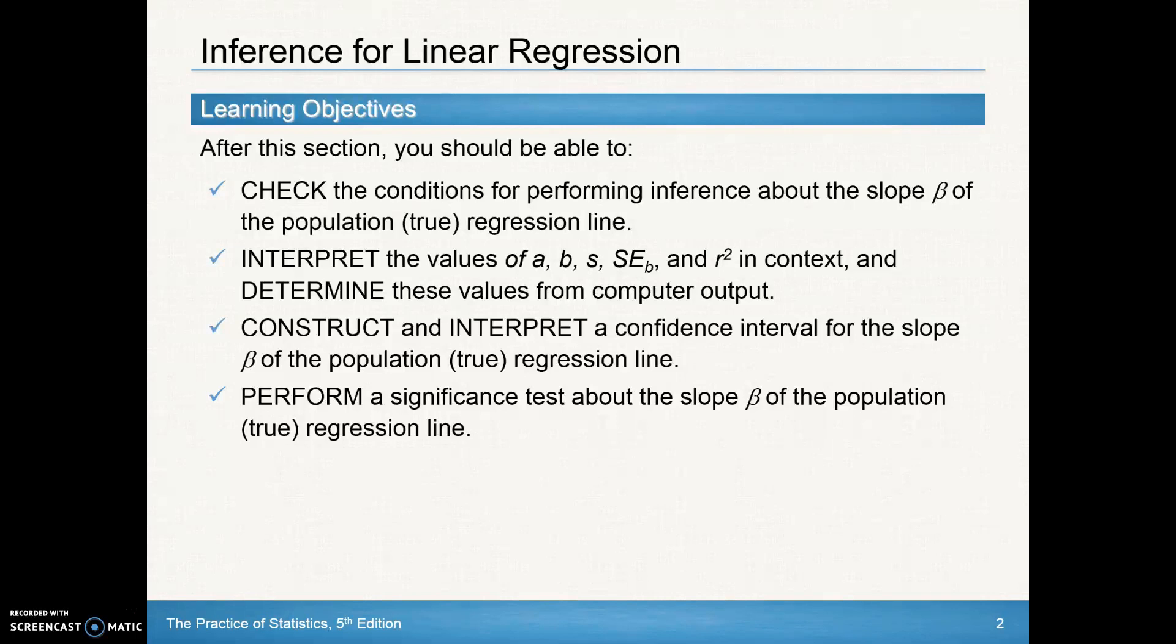After this section, we should be able to check the conditions. That's our second box in our state plan do and conclude procedures for performing inference. We're going to be looking at the conditions for making inference about the slope beta of a population regression line, or a true regression line.